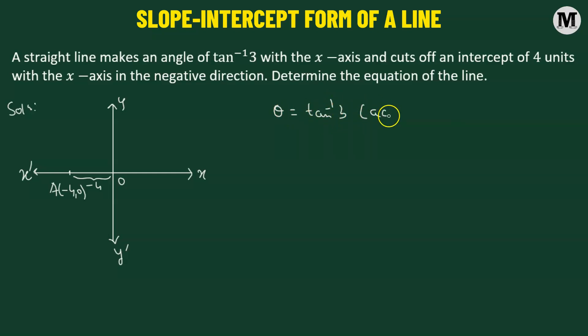Now tangent inverse of 3 means this is an acute angle. This will become evident in the moment how I got to know in advance that it's an acute angle, because if we want to find out the slope of that particular line, we take the tangent of that angle theta.